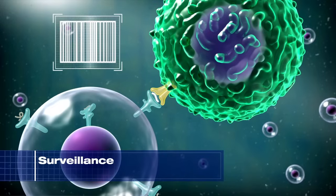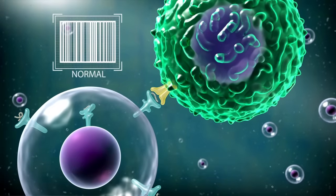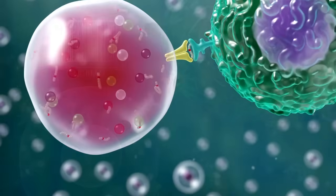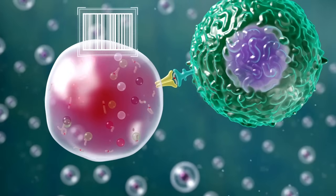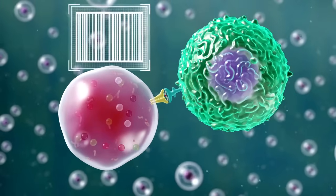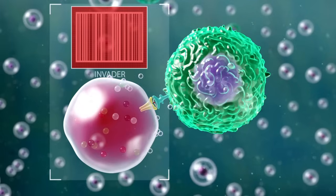If T cells recognize these peptides as normal, then the T cells move on. But if the peptides come from foreign invader proteins, then the T cells get activated to attack the invader cell with weapons to eliminate it.